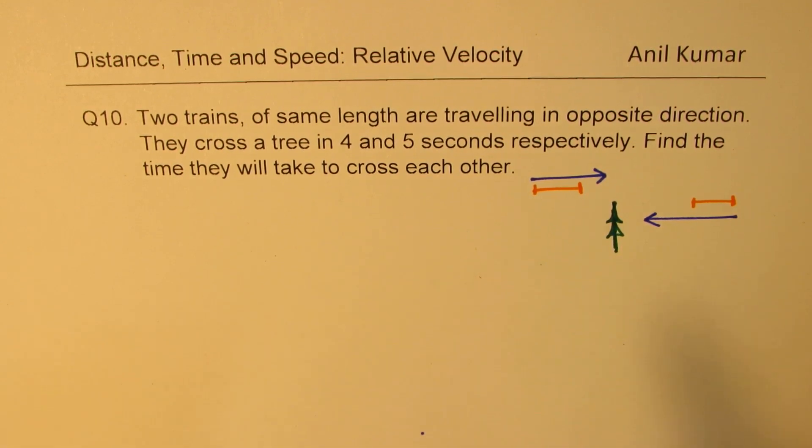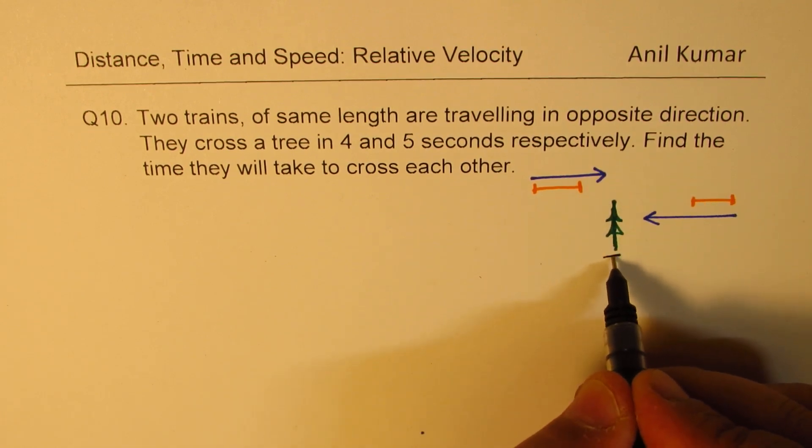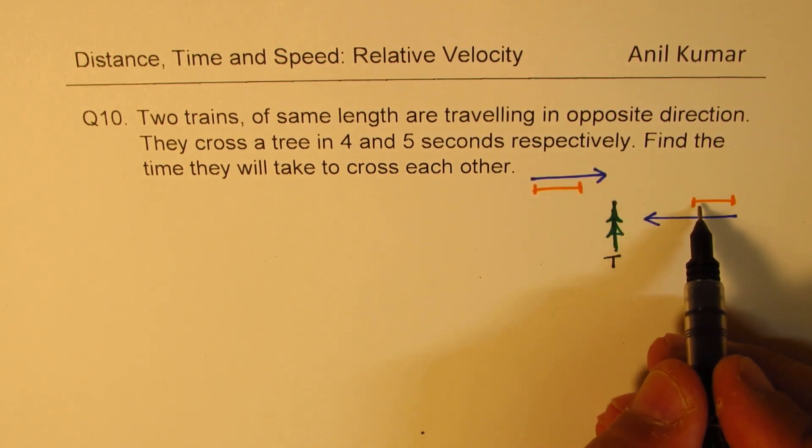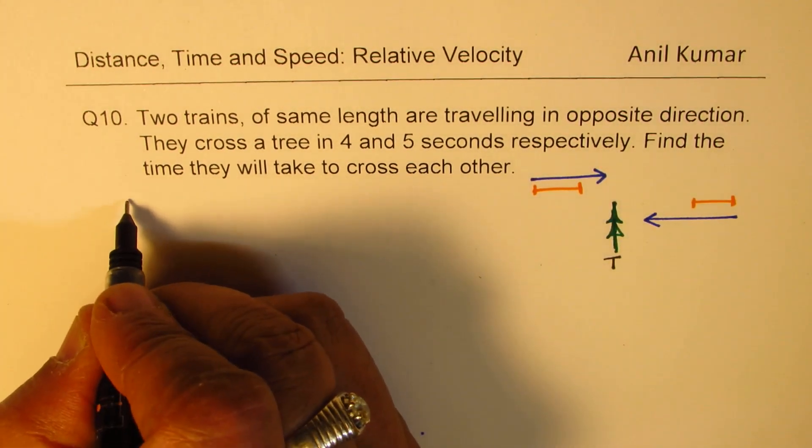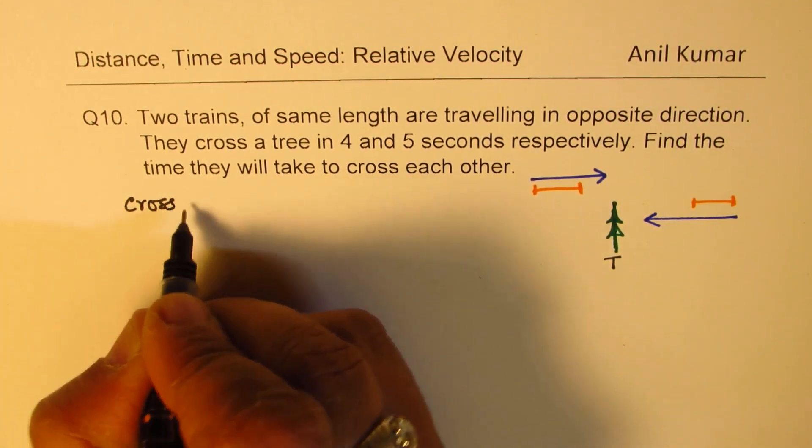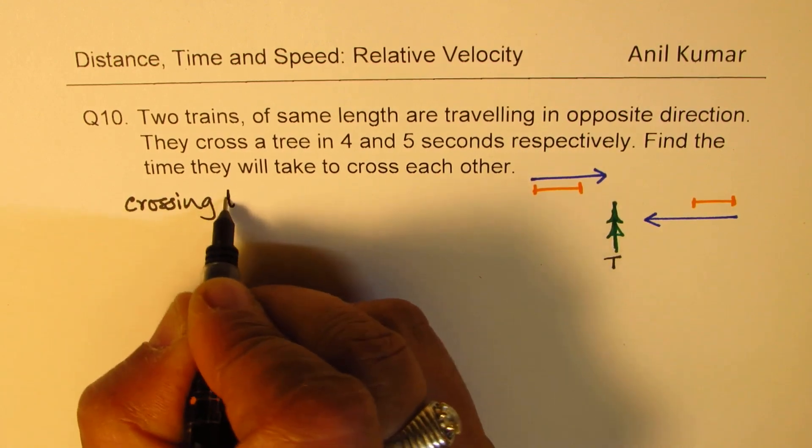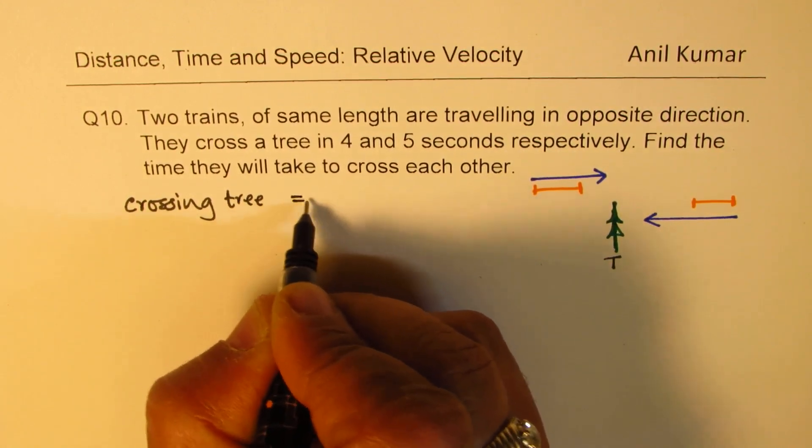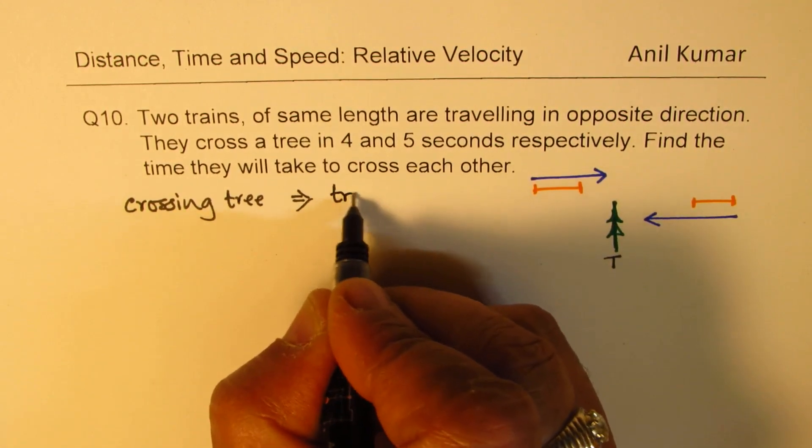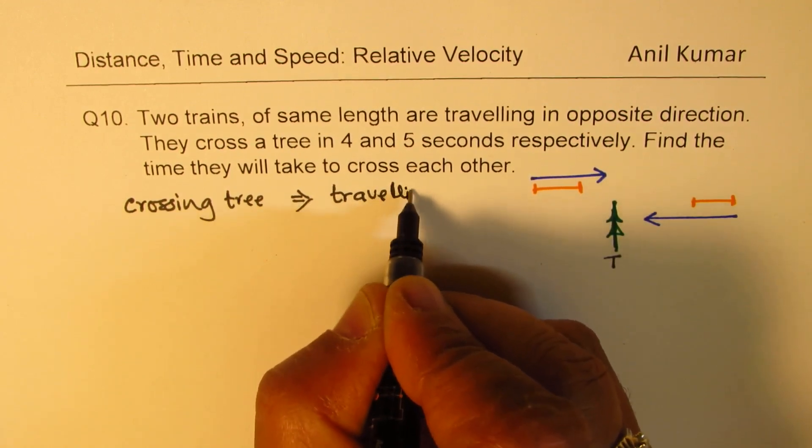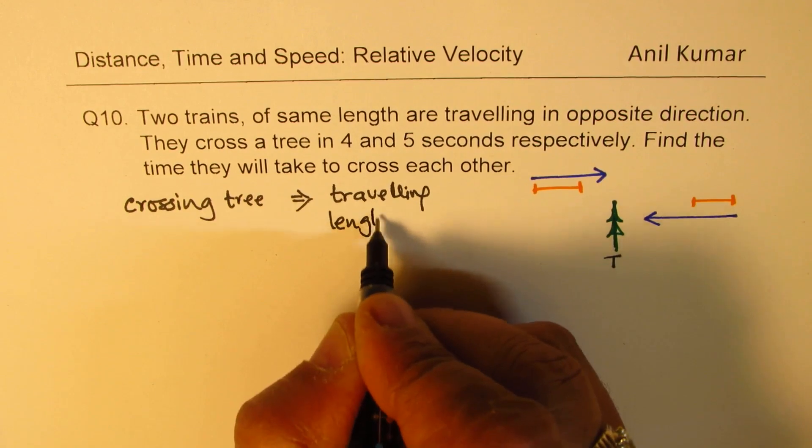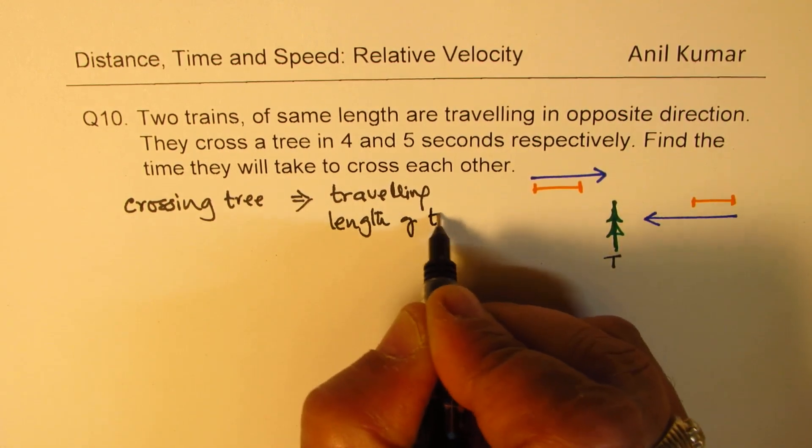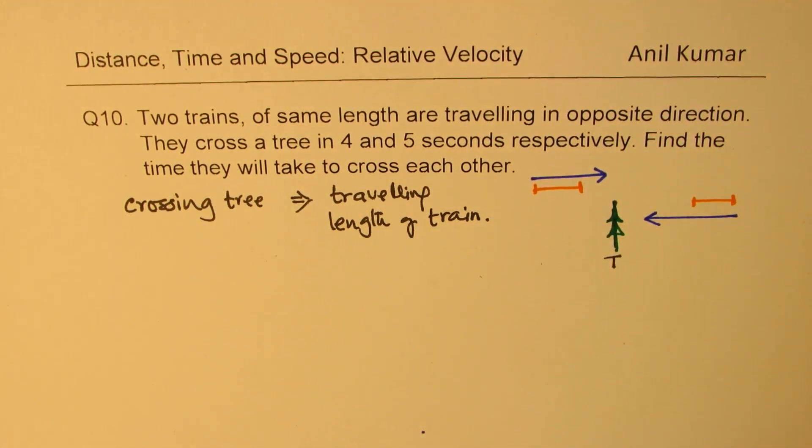So let us see, when they cross the tree, they are actually traveling the distance of their length. So important to understand is, crossing tree basically means traveling length of train. That is very important to understand.